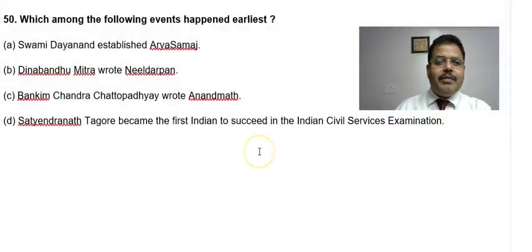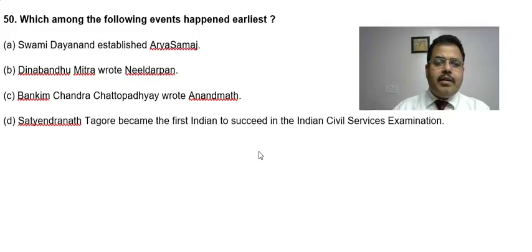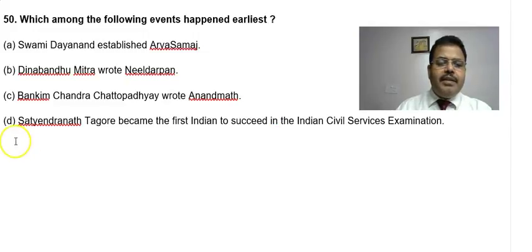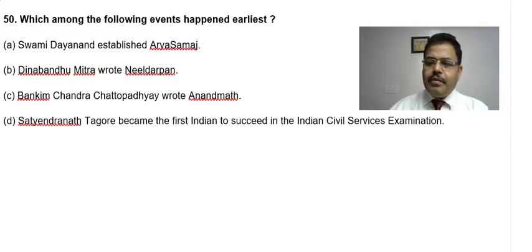Let us discuss question number 50, which is from history. Which one among the following events happened earliest? Swami Dayananda Saraswati established Arya Samaj; Dinabandhu Mitra wrote Nil Darpan; Bankim Chandra Chattopadhyay wrote Anand Math; and Satyendranath Tagore became the first Indian to succeed in the Indian Civil Services examination. This is a question about chronology for those aware of modern Indian history.